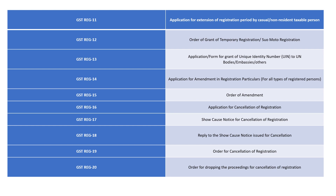GST REG-30 is the application for grant of a unique identification number to UN bodies and other specified entities. GST REG-14 is the application for amendment in registration particulars for all types of registered persons.